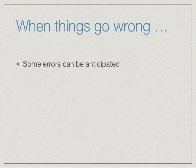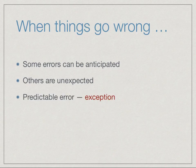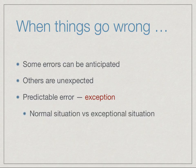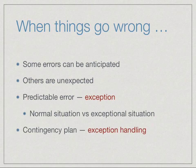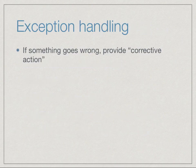Some of these errors can be anticipated whereas others are unexpected. If we can anticipate an error, we would prefer to think of it not as an error but as an exception — think of the word exceptional. We encounter a normal situation the way we would like our program to run, and then occasionally we might encounter an exceptional situation where something wrong happens. What we would like to do is provide a plan on how to deal with this exceptional situation, and this is called exception handling.